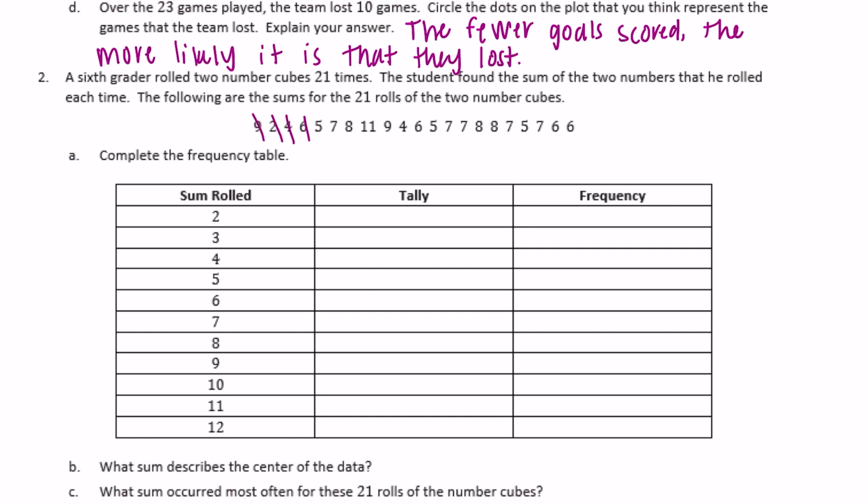So we have 9, 2, 4, 6. So I'll put a tally for all 9, 2, 4, and 6. And I'll keep going. 5, 7, 8, 11, 9, 4, 6, 5. So there's already a tally on 9, so I'm just going to add another one. 9, 4, 6, 5, 7, 7, 8, 8. So 2 more 7s, 2 more 8s. 7, 5, 7, 7, 5, 7, and then 2 6s.